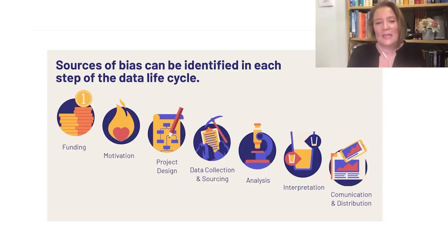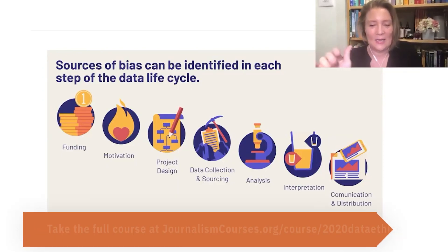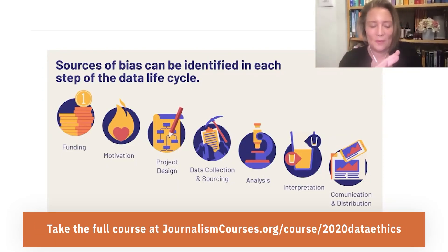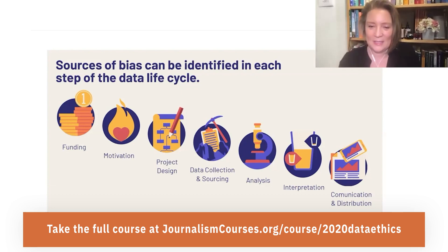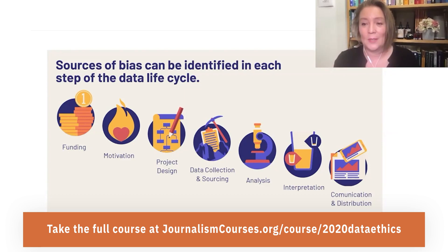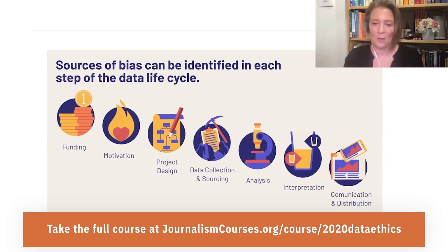Those are the seven steps in the data journalism cycle. We've covered funding, motivation, project design, data collection, and analysis. Then, once you have your analysis, this is where you, as a data journalist, probably do most of your work in steps six and seven, which is interpretation and communication.